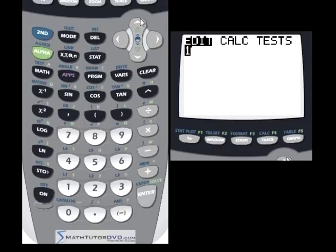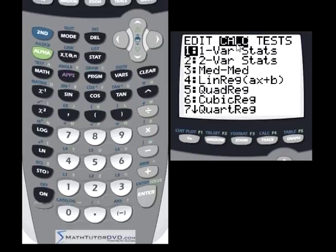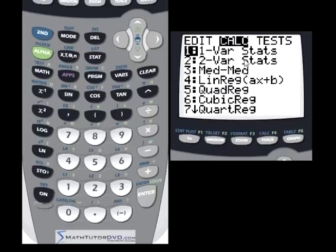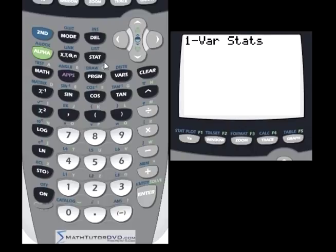The next thing you want to do is go back into the stat menu and go over to the calc menu. The first two lines are interesting: one variable statistics and two variable stats. Let's go ahead and hit one variable stats. This is going to basically calculate a whole potpourri of cool little things that usually would take longer in a lesser calculator, but will be done in an instant.